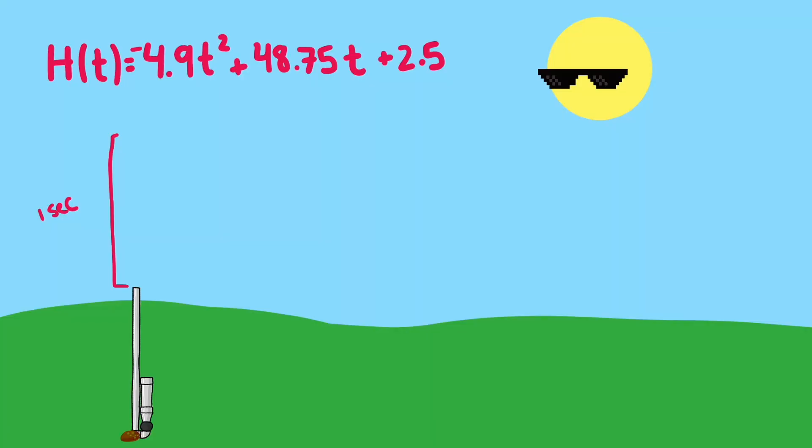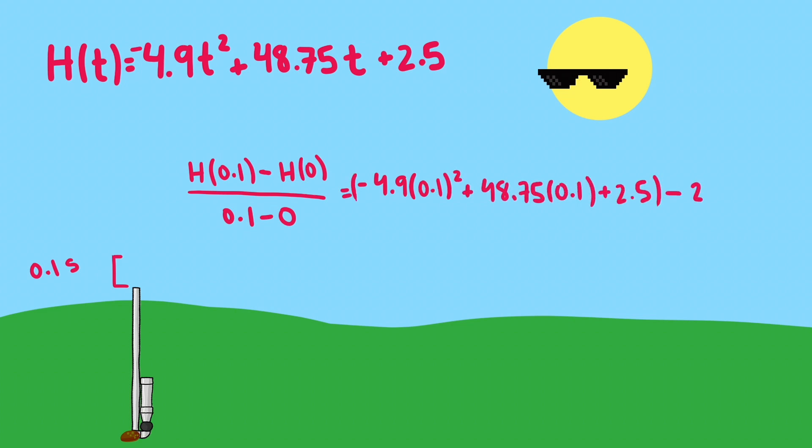But we are underestimating the real speed, since the potato would have slowed down a bit after one second, so we can take a shorter time interval to be more accurate. What about 0.1 seconds? Evaluating our height formula at 0.1 and doing the same math we just did before gets us a ratio of 48.26 meters per second, a bit faster than our previous estimate. For practical purposes, that's probably good enough.